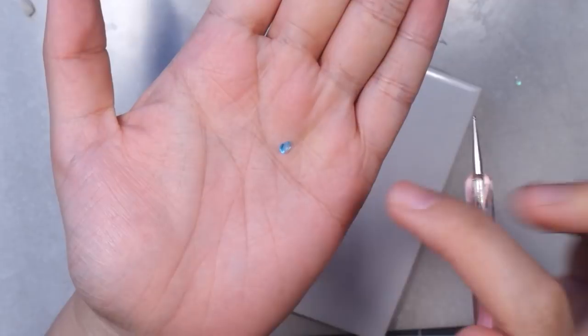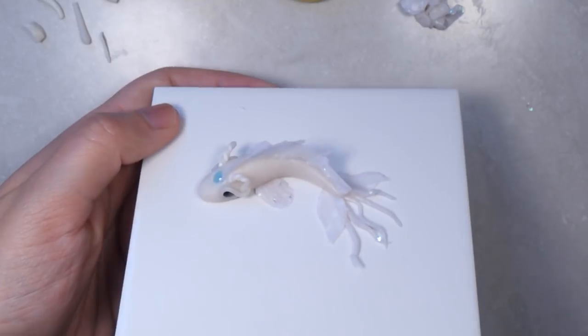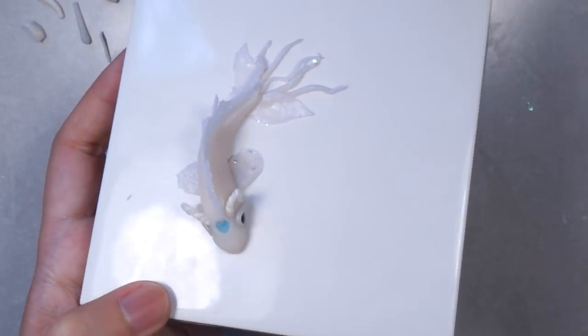On the forehead, I'm going to add a zircon which is available on my Etsy. A lot of materials I use in this video can be found on my shop if you want to get into polymer clay.